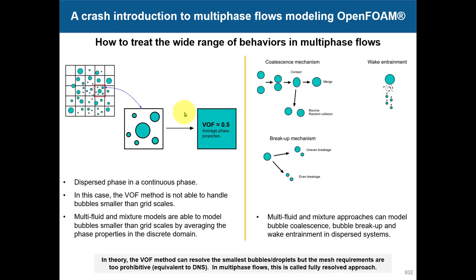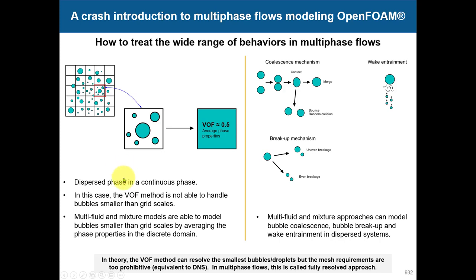When doing the dispersed case, remember you have small droplets or bubbles dispersed in a continuous phase — you cannot resolve these directly since they are very small and would require a super-fine mesh. What we do instead is model them: take a computational cell and average the behavior within it. So in the simulation you are not seeing the actual bubbles; you are seeing an averaged solution. That is the approach we take.